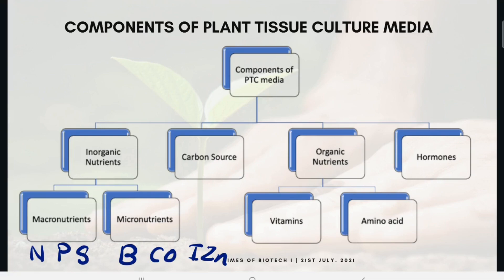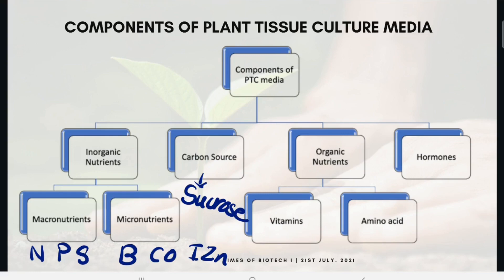Another component is the carbon source. The most common source of carbon utilized in tissue culture is sucrose. Since most plant cultures are unable to photosynthesize effectively, thus losing autotrophic ability, they need external carbon for energy. Thus, we provide sucrose, fructose, or any carbon source that will give energy to the plant.